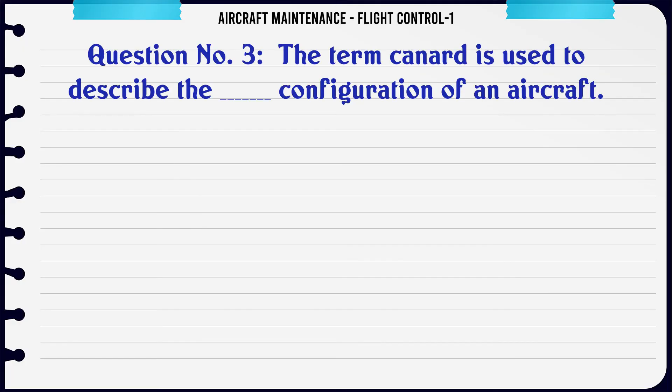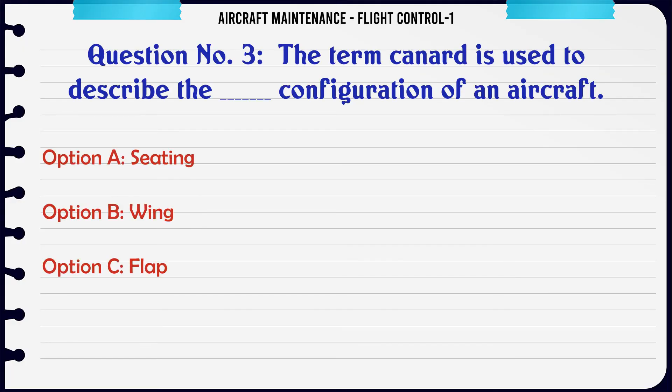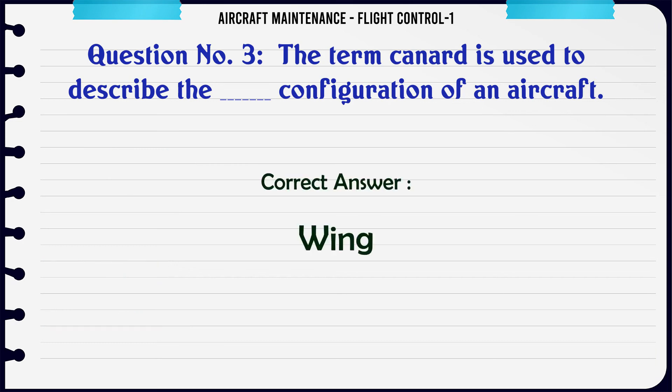The term canard is used to describe the configuration of an aircraft. A. Seating. B. Wing. C. Flap. D. Engine. The correct answer is Wing.